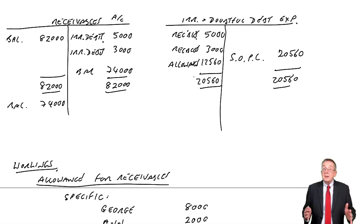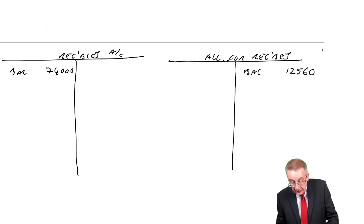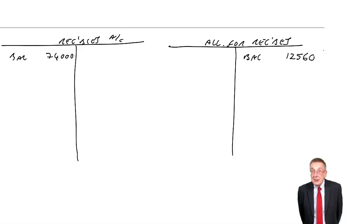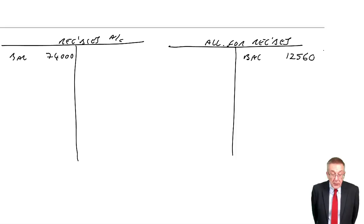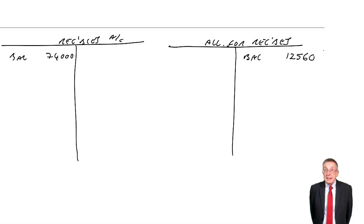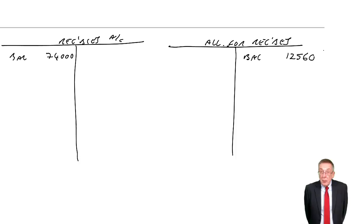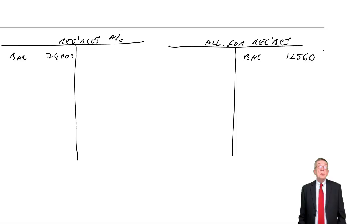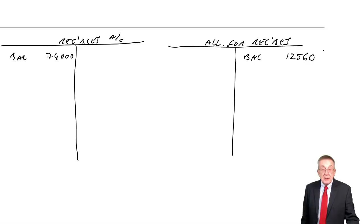Now let's go through example three. During the year ended 31st December 2001 — the second year — Scylla made sales on credit of £261,000 and received cash from customers of £238,000. These amounts have been entered into the receivables account. So what would the bookkeeper do? When we make sales on credit, the double entry is debit receivables, credit sales. When we receive cash from customers, £238,000: debit cash, credit receivables.